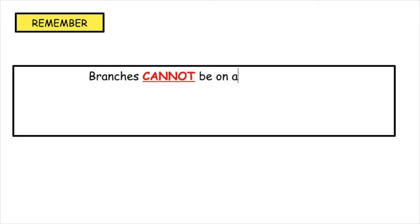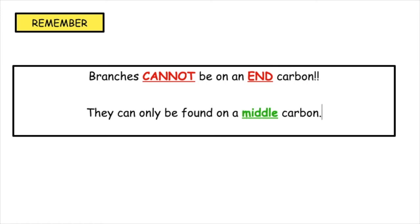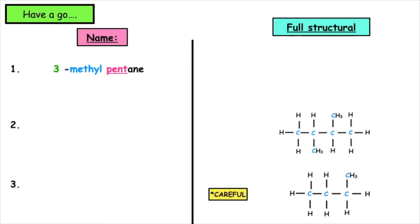An important rule to remember: branches cannot be on an end carbon - they can only be found on a middle carbon. Be careful with tricky past paper questions. If you want, pause the video and have a go at naming and drawing the full structural formula for the examples given, then press resume and the answers will appear on screen.